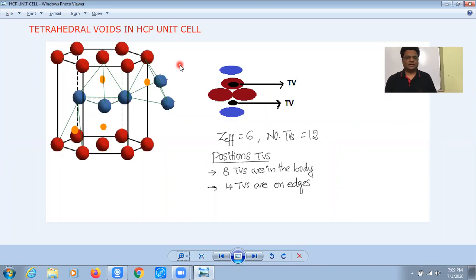Hello all. In this video, we are going to discuss the position of tetrahedral voids and their effective number in an HCP unit cell. Here I have already drawn the position of tetrahedral voids. It's actually formed between four atoms of this arrangement.